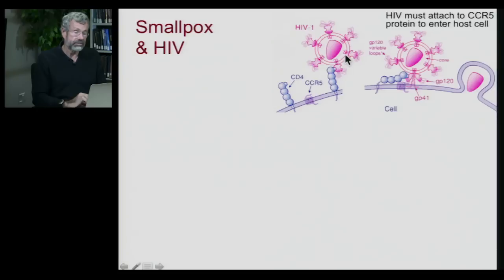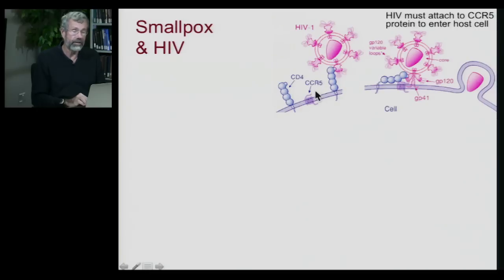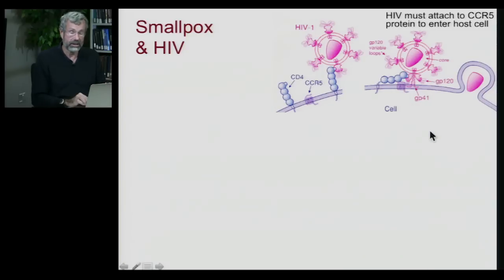The HIV virus has to latch on to the host cell. It's looking for a receptor — the CD4 receptor on the host cell — and then it's looking for the CCR5 protein. And if it can find both of them, it latches in and is actually able to inject its RNA inside the human cell so that reverse transcription can take place and infection can proceed.